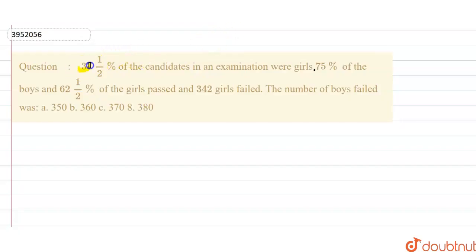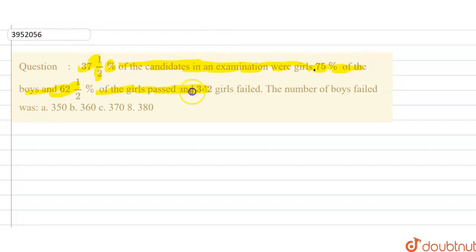Our question is: 37.5% of the candidates in an examination were girls. 75% of the boys and 62.5% of the girls passed, and 342 girls failed. The number of boys who failed was: 350, 360, 370, or 380? Let's solve it.